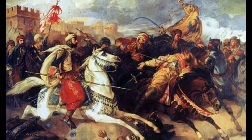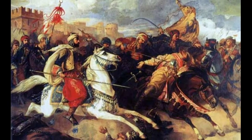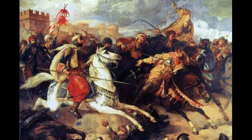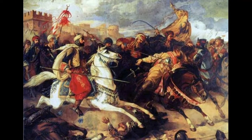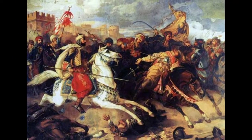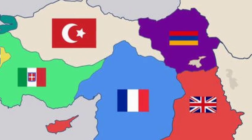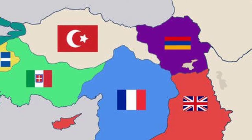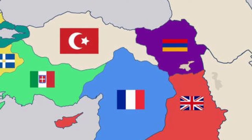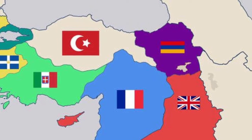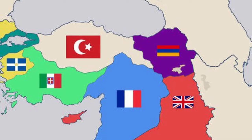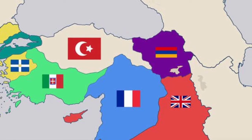The partitioning of the Ottoman Empire after the war led to the domination of the Middle East by Western powers such as Britain and France, and saw the creation of the modern Arab world and the Republic of Turkey.